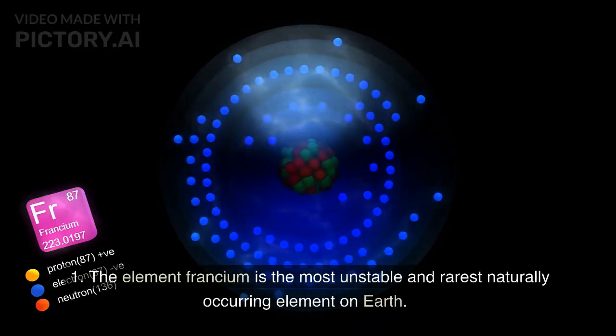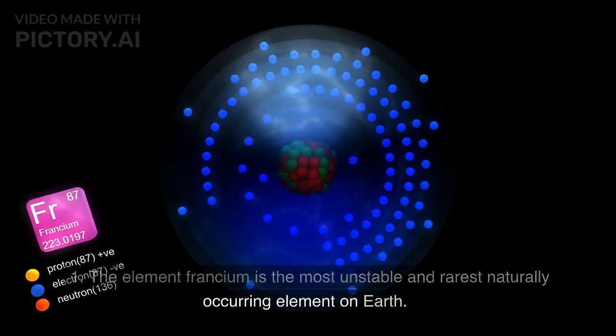The element francium is the most unstable and rarest naturally occurring element on Earth. It has a half-life of only 22 minutes and is produced from the radioactive decay of other elements.